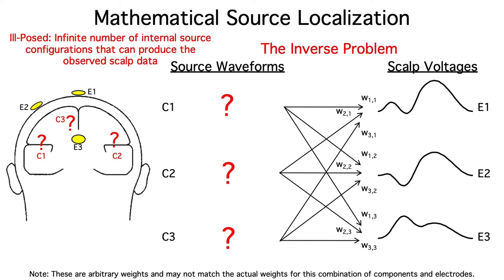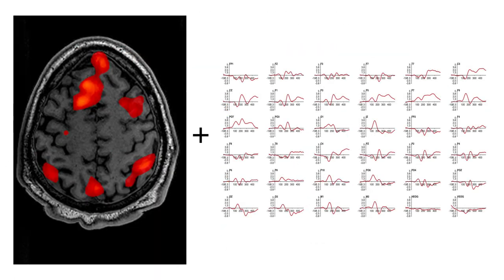Before I discuss mathematical source localization techniques, I'd like to briefly address a question that I'm often asked. Couldn't we just combine fMRI and ERP data to get both spatial and temporal resolution? Unfortunately, it's not that easy.